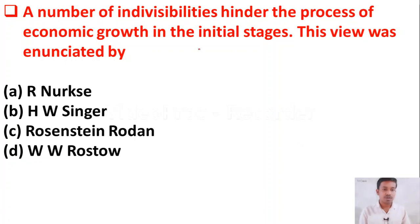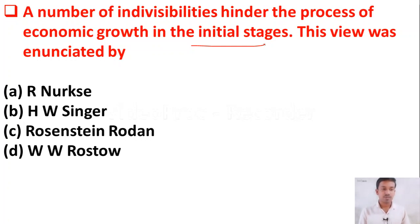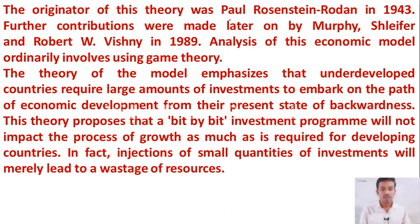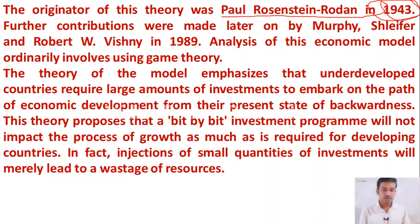The next question: a number of indivisibilities hinder the process of economic growth in the initial stages — this view was initiated by option A: Ragnar Nurkse, option B: H.W. Singer, option C: Rosenstein-Rodan, option D: W.W. Rostow. This comes under the Big Push theory, given by Paul Rosenstein-Rodan in the year 1943.